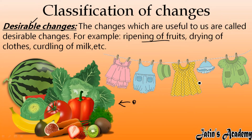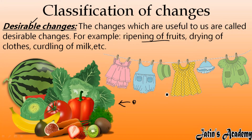The second example is drying of clothes. For example, your mother has washed the clothes and now they are drying. Drying of clothes takes place in the atmosphere, so it is desirable. We need the clothes to dry, so that is a desirable change.